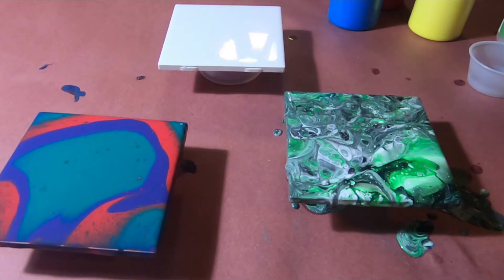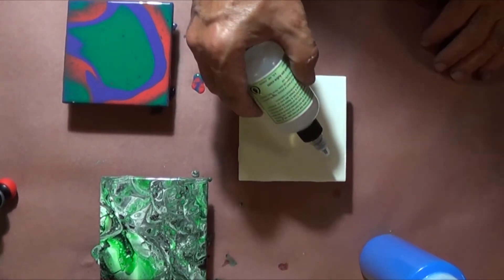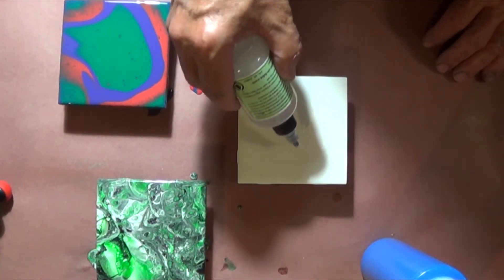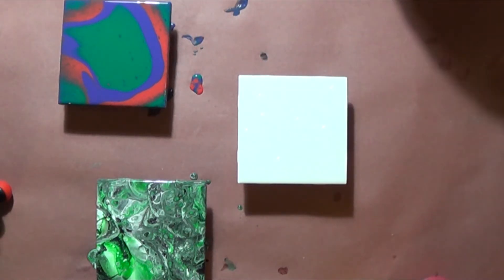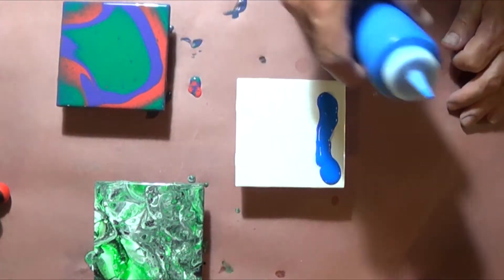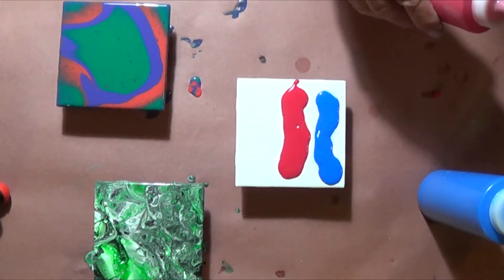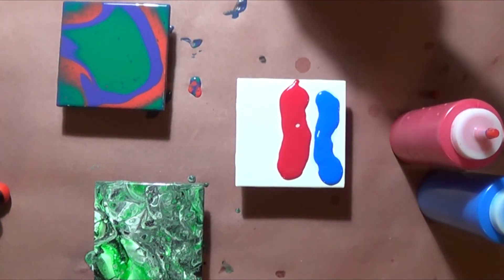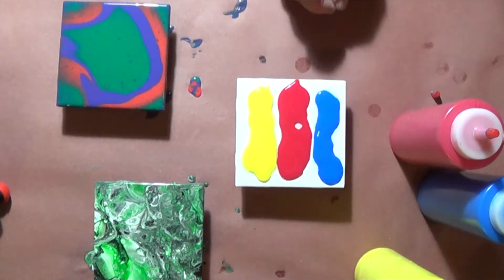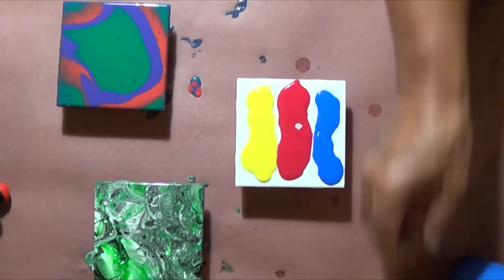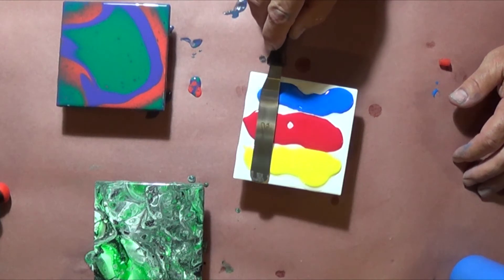Okay, so now I'm going to do my primary colors on this one. And I'm going to try something different. I'm going to put drops of silicone actually on my surface, and then I'm going to pour my colors. And then I've got this little tool. Get my paints out of the way. I've got this little spatula tool.